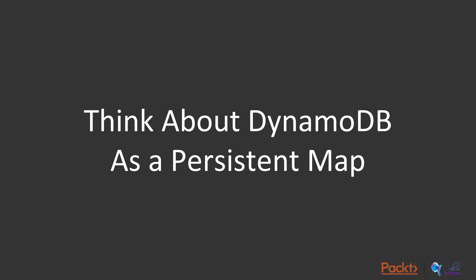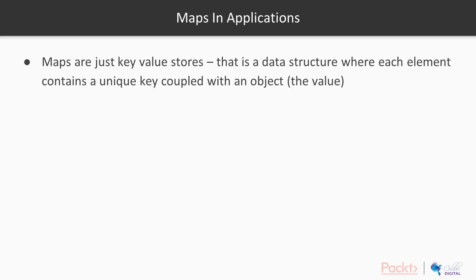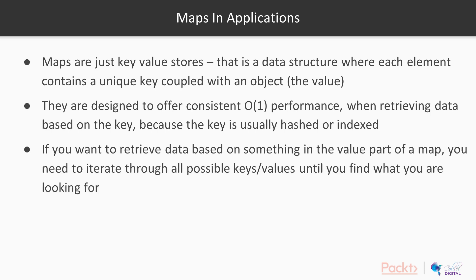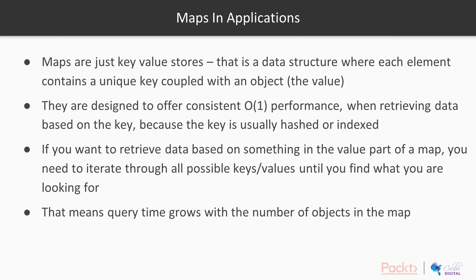I want you to think about DynamoDB as a persistent map. When you're designing use cases for DynamoDB, imagine that it's a map or a dictionary — the only thing it's doing for you is storing it persistently and durably across three availability zones, six copies. It's a map. Please think about it as a persistent map. Maps are just key-value stores — a data structure where each element contains a unique key coupled with an object, the value. They're designed to offer consistent O(1) performance when retrieving data based on the key, because the key is usually hashed or indexed. This is exactly what DynamoDB does. If you want to retrieve data based on something in the value part of a map, you need to iterate through all the possible keys and values until you find what you're looking for, so query time grows with the number of objects in the map.